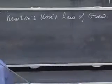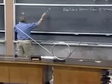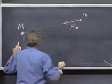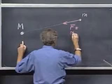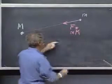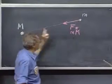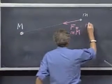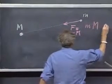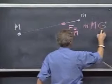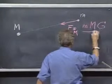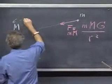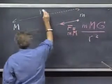He says the force that little m experiences, this force, equals little m times capital M times a constant, which Newton in his days didn't know yet what that value was, divided by r squared, if r is the distance between the two.